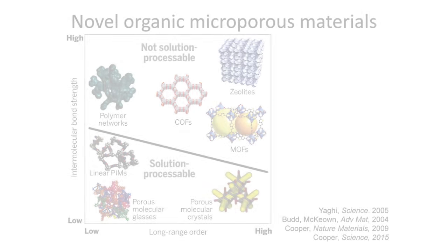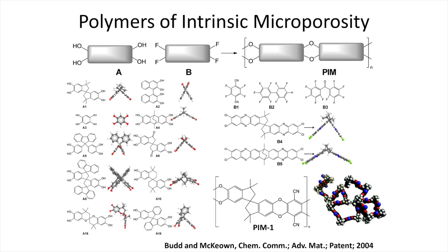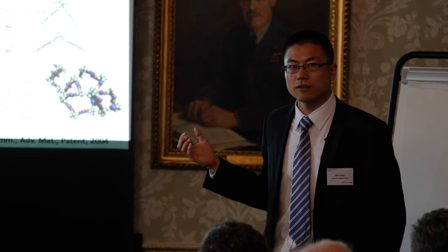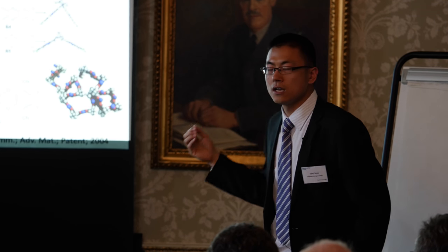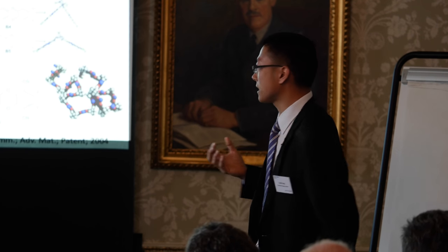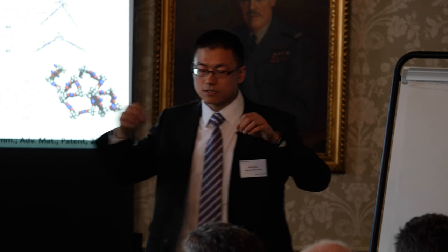We're looking at polymers that have intrinsic microporosity — termed PIMs, or polymers of intrinsic microporosity. This type of polymer was invented by Peter Budd and Neil McKeown at Manchester University about 12 to 13 years ago, and has been developed by many groups worldwide for about 10 years. The first commercialisation has been achieved in sensors such as gas masks, but we are looking at other application areas.